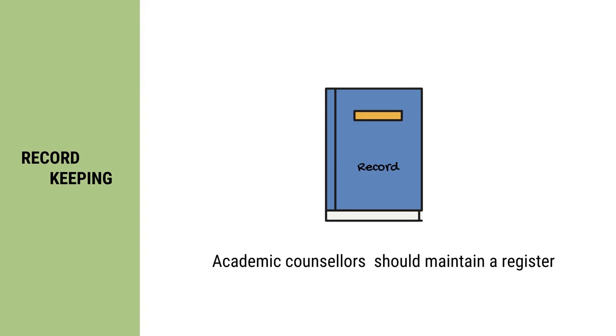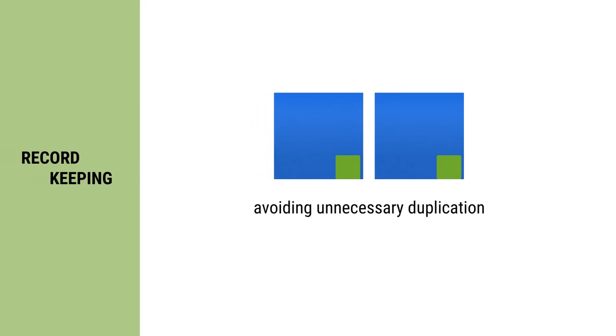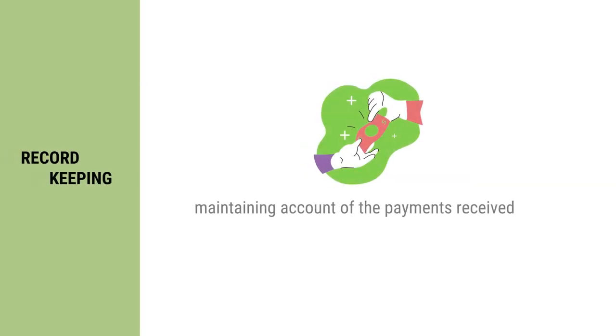Besides these discrimination factors, there are a couple of other things the assessor should keep in mind. First, record keeping. Record keeping is an essential activity for all assessors or evaluators. Assessors dealing with assignment responses should maintain a record of all the assignments they evaluated. This helps them in providing personalized comments to learners on their progress and performance, in avoiding unnecessary duplication of work, and in maintaining records and accounts of the payments they receive for evaluating assignment responses.